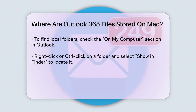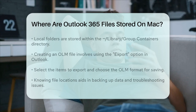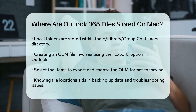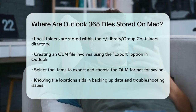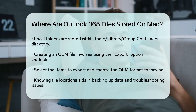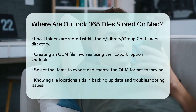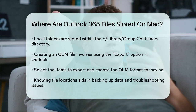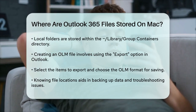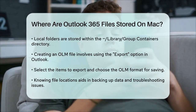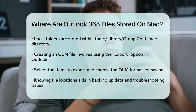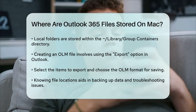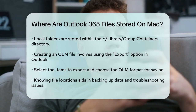Creating an OLM file manually is also straightforward. Open Outlook, go to the top menu bar, select File, then click Export. Choose the items you want to export, such as emails, contacts, or calendar events, and select Outlook for Mac data file (.olm) as the export format. You can then choose where you want to save this OLM file.